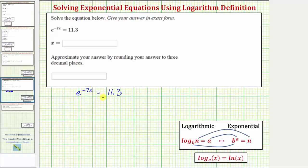For this example, we'll be applying the definition of a logarithm shown here, where these two equations are equivalent, and we'll use this definition to write the exponential equation as a log equation. Where b is the base, a is the exponent, and n is the number.